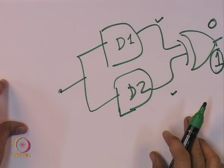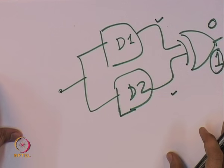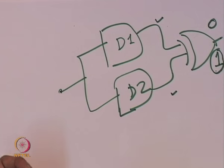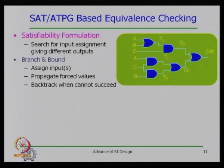One technique is SAT-based: we search for an input assignment that can give different outputs for the two different designs. The SAT or 3-SAT problem is NP-complete, so we use heuristics like branch-and-bound: assign some input, propagate, check the output, and if there is a conflict, backtrack until you succeed.